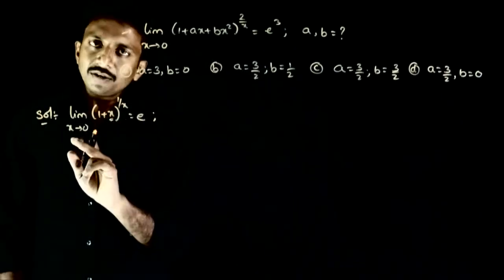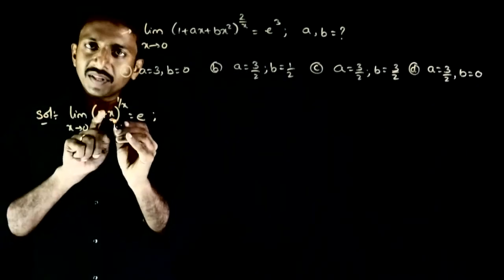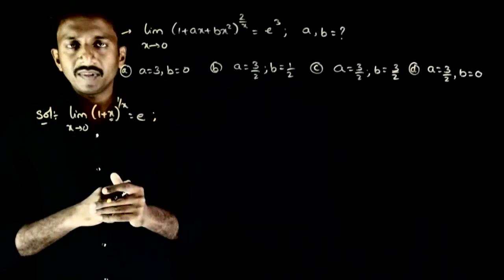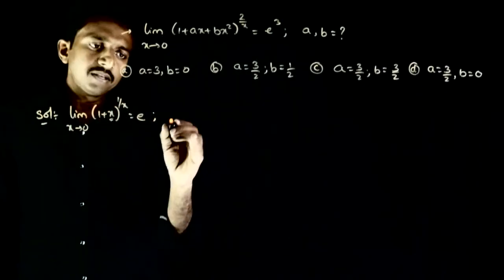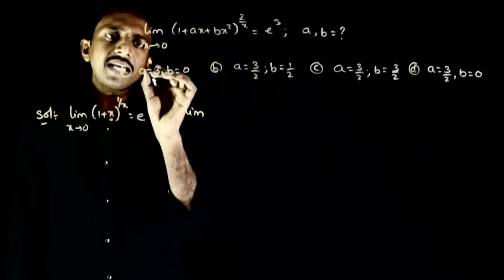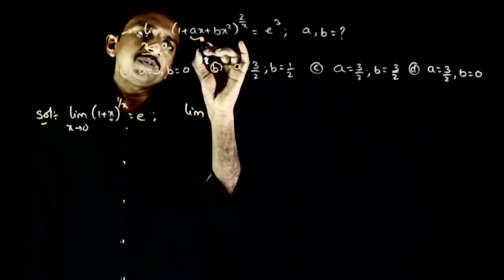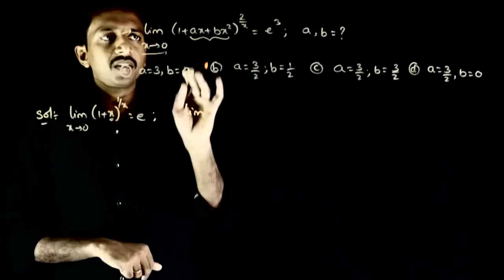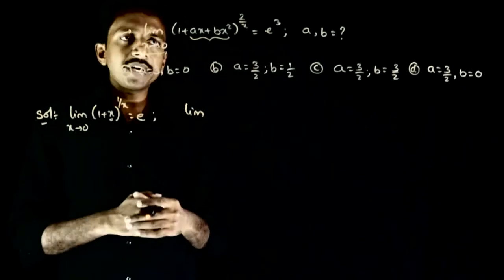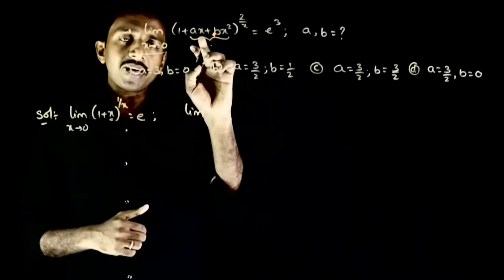Something should tend to 0. You should have 1 plus something whole power 1 by something. So aisa hai to e ai jaye ga. So limit Agar x tends to 0 hai toh Ax plus bx square kaha jaye ga. Ax plus bx square also tends to 0. Because yaha x hai yaha bhi x hai.